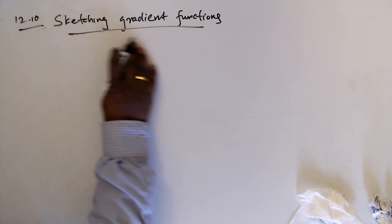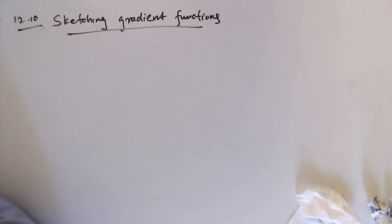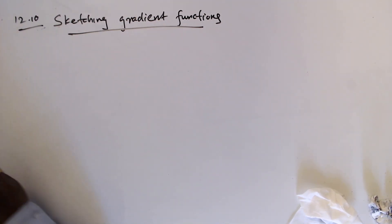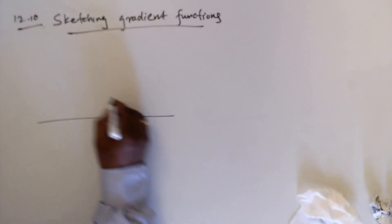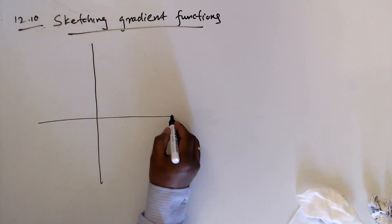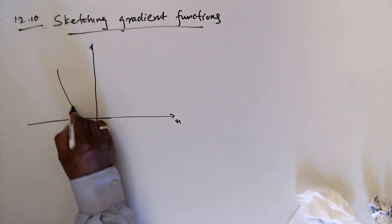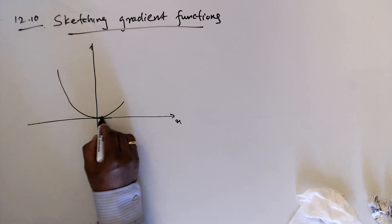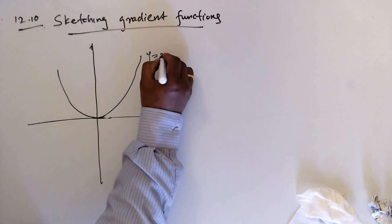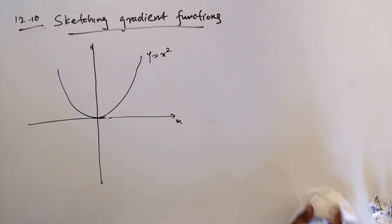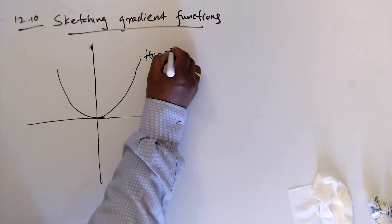12.10 is about sketching gradient functions. We'll sketch a gradient function and see how it looks. Let's use y equal x squared.